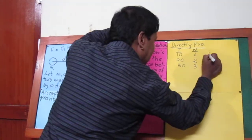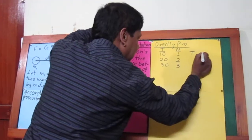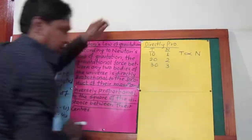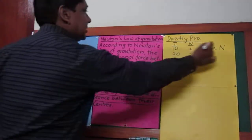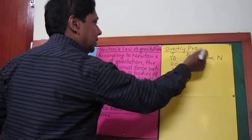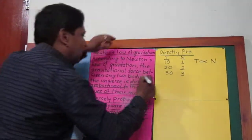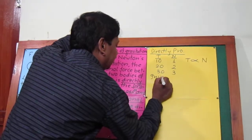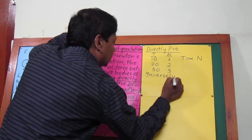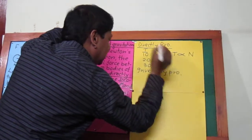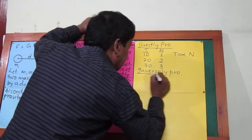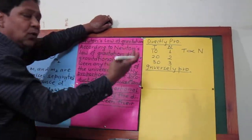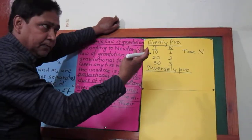Such a relation is called directly proportional. That's why we can say: total cost is directly proportional to number of books. This is the real meaning of directly proportional. Now let's talk about inversely proportional. Let's say we have four rooms and we are going to use paint on the walls of the rooms.